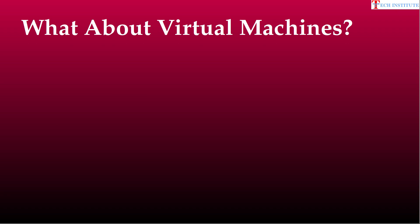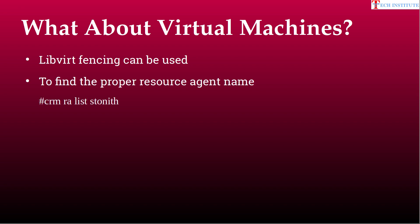For virtual machines — specifically KVM virtual machines — you can use the library libvirt as a fencing mechanism instead of BMC. To find the proper resource agent name, run the command 'crm ra list stonith', which lists all resource agents available in your cluster. For KVM, you need to use 'fence_virsh' as the STONITH device.